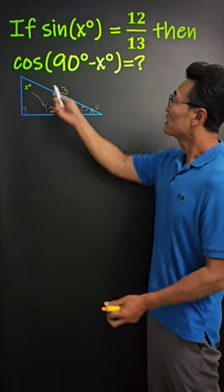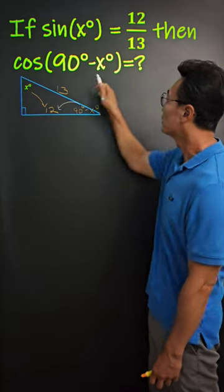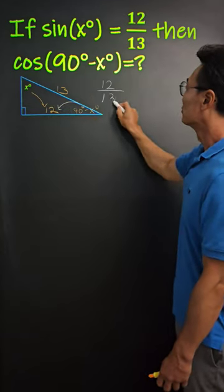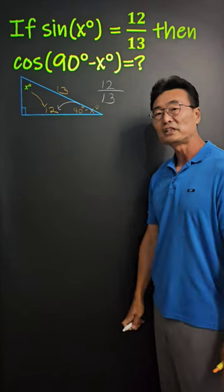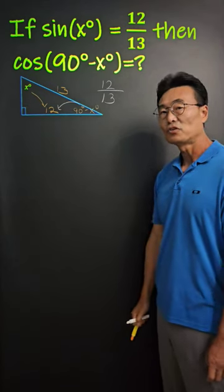Finally, cosine of 90 degrees minus x degree is adjacent over hypotenuse, which is 12 over 13. Notice that sine of x degree and cosine of 90 degrees minus x degree are the same, and it's not a coincidence.